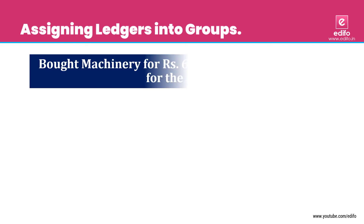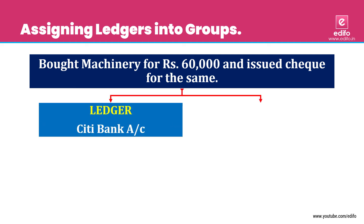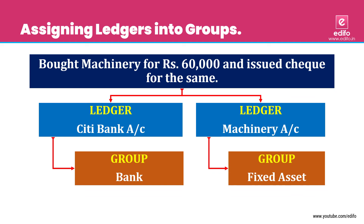Next transaction: bought machinery for Rs. 60,000 and issued a cheque. We bought the machinery for 60,000 and instead of paying cash, we issued a cheque, so bank account reduces. Two aspects: Citibank account and machinery account. Citibank belongs to 'Bank' group and machinery belongs to 'Fixed Asset' group.